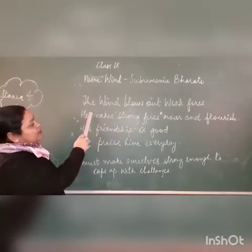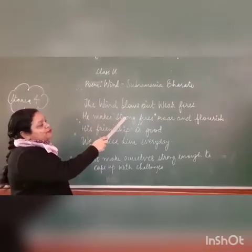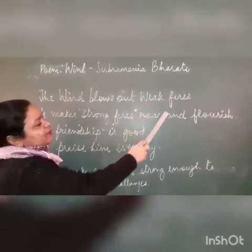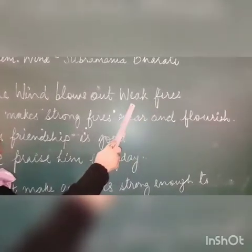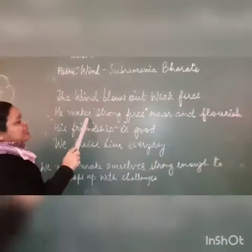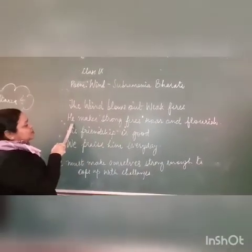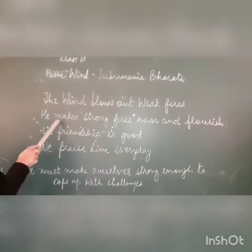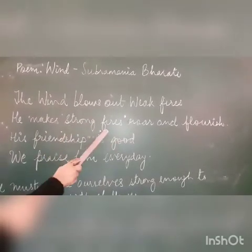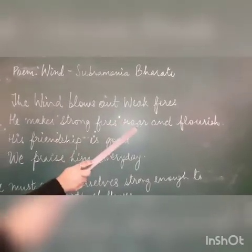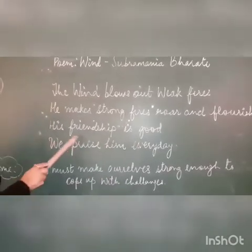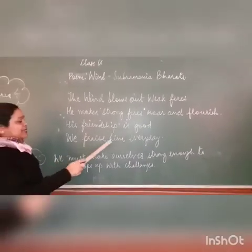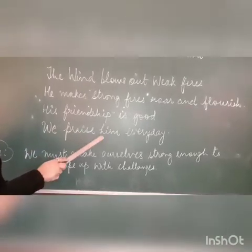Blows out weak fires — the wind blows out fires that are weak. Here 'weak' is an adjective and 'fire' is a noun, so a noun modified by adjective forms a transferred epithet. He makes strong fires roar and flourish — here 'he' is again personification, the wind given the quality of a human being. People who are strong, they prosper, shout and flourish. His friendship is good — friendship of strong people is always good because they bring us strength and agility. We praise him every day.